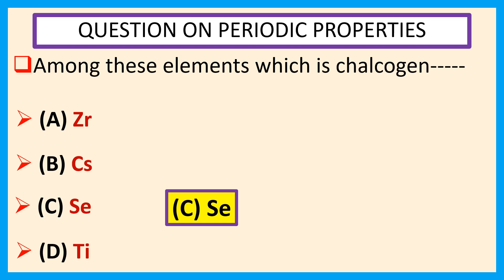Chalcogen means ore-forming. The elements of Group 16, such as oxygen, sulfur, selenium, and tellurium,